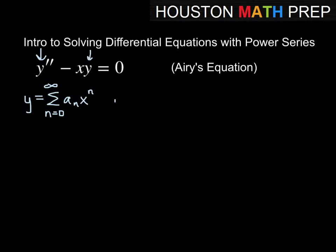Let's look at y prime. If we differentiate a sub n times x to the n, a sub n is just a number, so n comes out front, multiplies the a sub n, and the power decreases by 1 to get x to the n minus 1. The index adjusts: we start at n equals 1 to infinity, because we need to start at the power x to the 0.